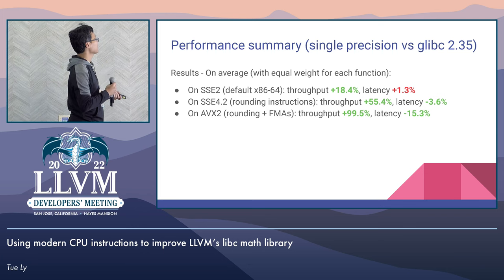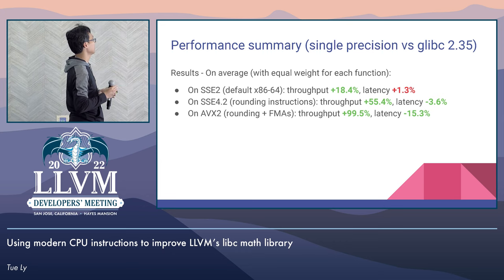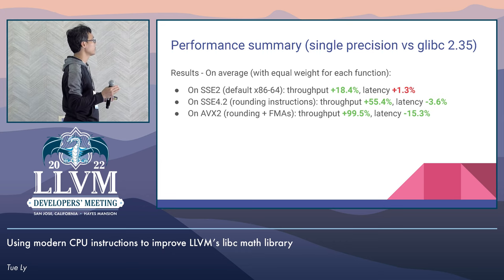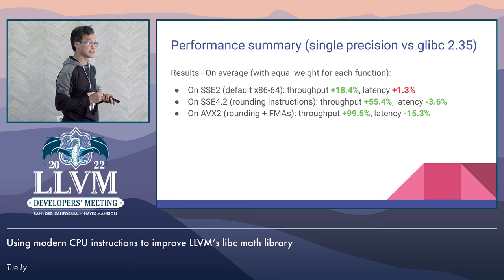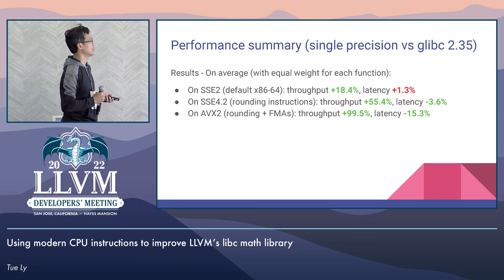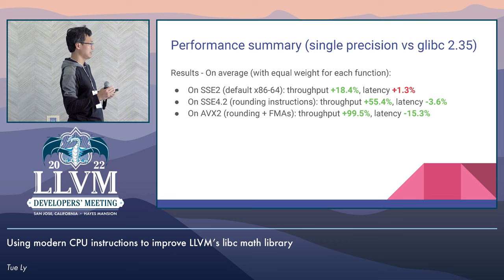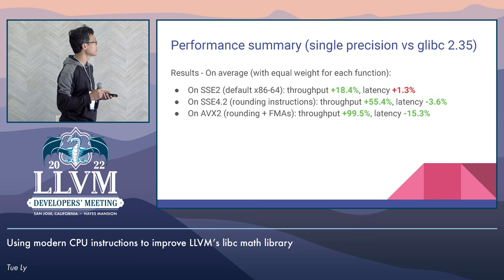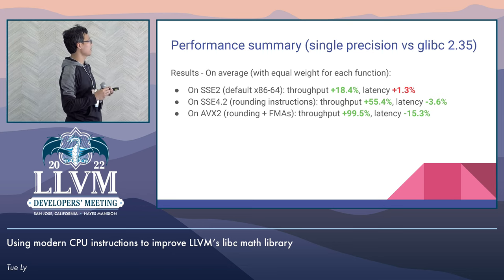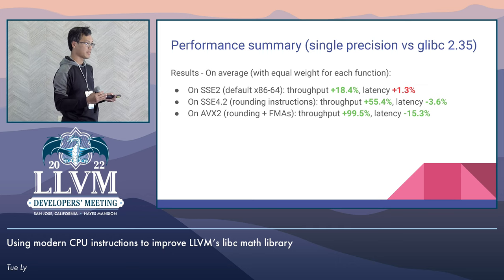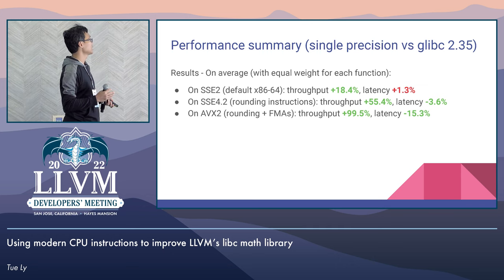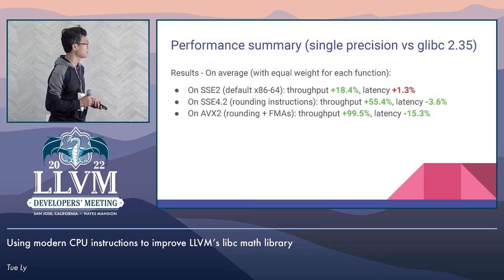On average, our implementations without any extra rounding instructions or FMA have 20% higher throughput than GCC, with slightly lower latency. With rounding instructions, the throughput improvement increases to 50% and latency reduces about 4%. With both rounding and FMA together, on average we double the throughput of GCC and reduce the latency by a factor of 1.6.